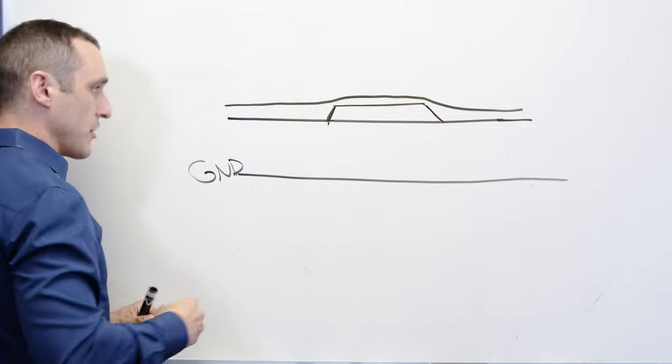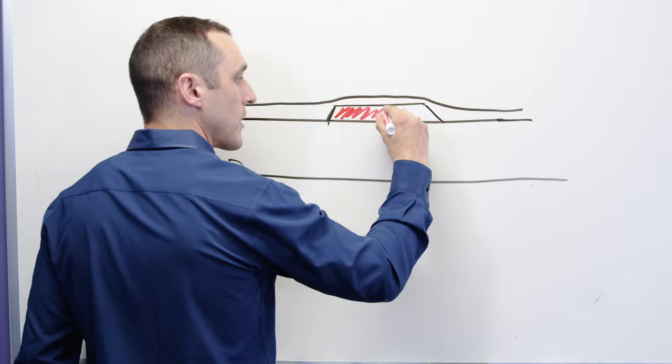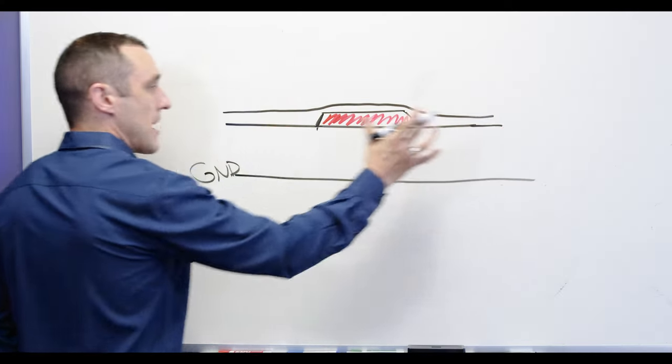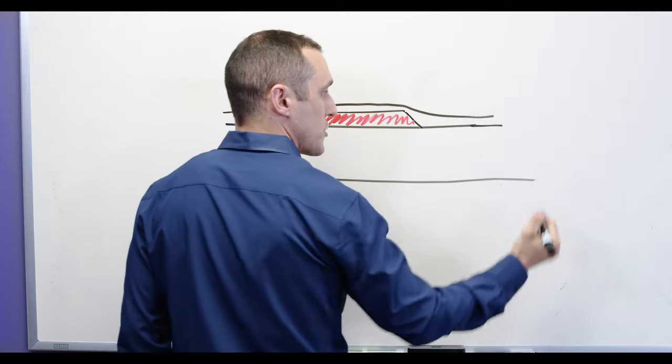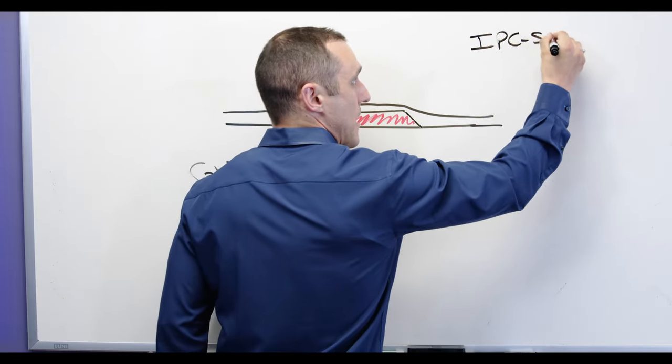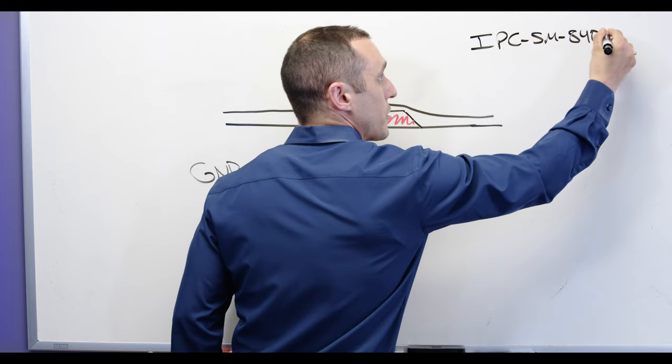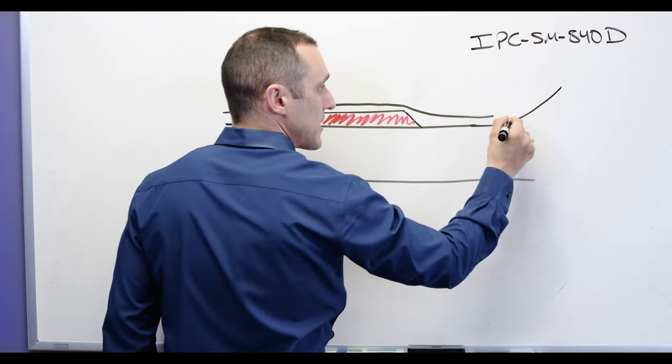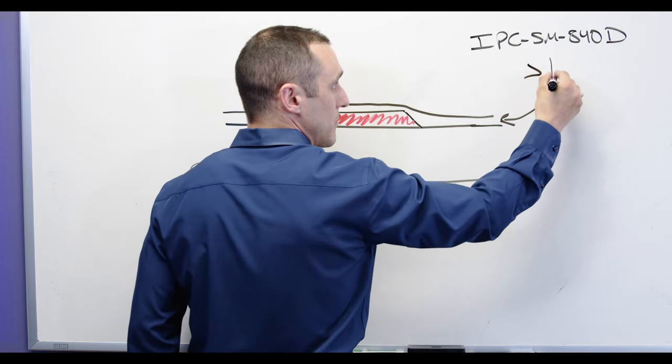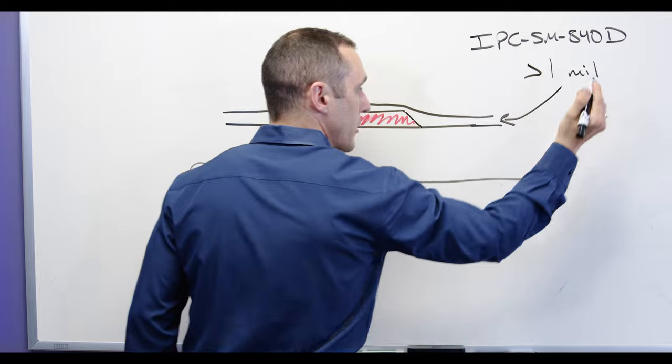Here I have the copper and coated onto the copper is our solder mask. The thickness of this solder mask in the areas farther away from this trace is specified under the IPC-SM-840D standard and that thickness here in this region away from the trace is generally specified to be greater than one mil thickness.